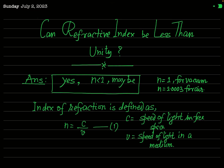In books you generally find the information that the refractive index of vacuum is least and it is equal to 1. It means the minimum refractive index is for vacuum or free space and its value is 1. At the same time you also find that the refractive index n of air is 1.0003, which is very close to 1, and in general calculations you take the refractive index of air as also equal to 1.